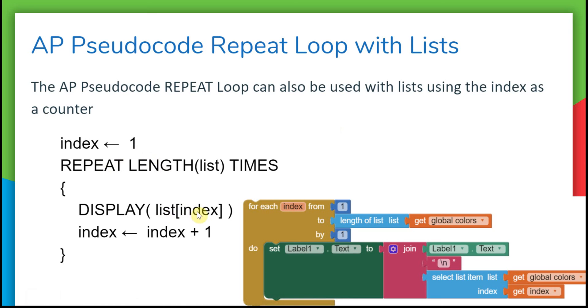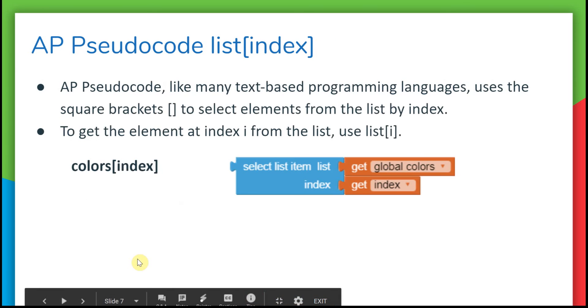That happens automatically in the for-each number loop - it adds one each time. So the first time around it'll be the list item at index one. Next time, once you add one to it, it'll be list item number two, then list item number three. If that's the length of your list, you would come out of the loop.